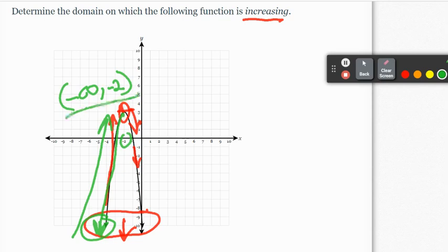And so my answer could be written here. This is my increasing interval, or you could say everything X is increasing from left of negative two. Either way you want to write that. I would write this one. So that's the increasing interval.